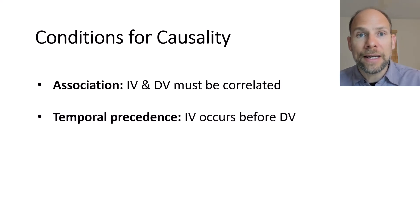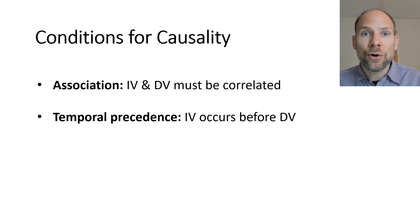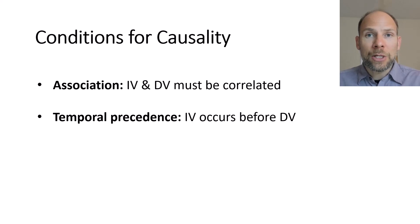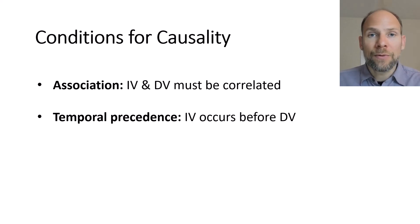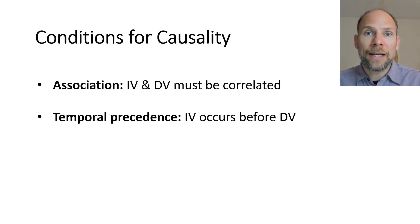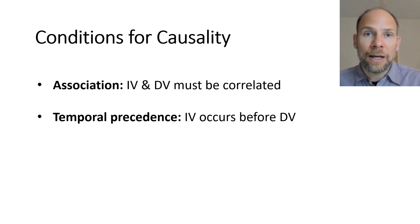The second condition is temporal precedence, meaning that the independent variable or cause has to occur before the dependent variable. This can be ensured with a longitudinal design — a repeated measures study where F1 is measured prior to F2, so you can ensure that F1 is measured first. Longitudinal designs can be analyzed with structural equation models: longitudinal SEM, longitudinal confirmatory factor analysis, latent autoregressive cross-lagged models, random intercept cross-lagged panel models, and growth curve models are all available.